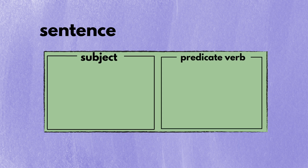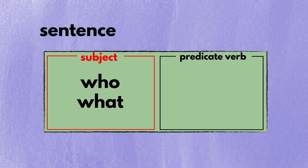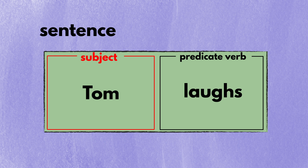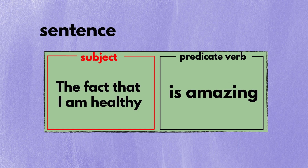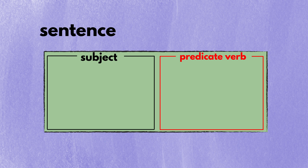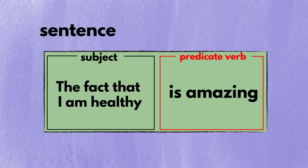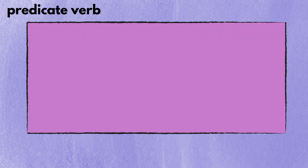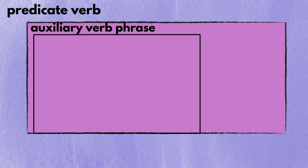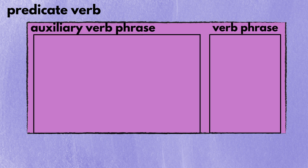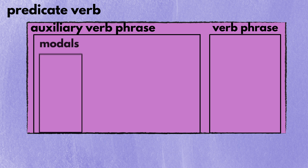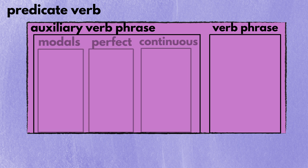What is a predicate verb? Every English sentence must have a subject and a predicate verb. The subject is the who or what in a sentence, like Tom, a cat, or the fact that I am healthy. The predicate verb is the information on that who or what, for instance laughs, eats a fish, or is amazing. A predicate verb has two large parts: the auxiliary verb phrase and the verb phrase. The auxiliary verb phrase has three parts inside: the modals, the perfect, and the continuous — all of them are optional.